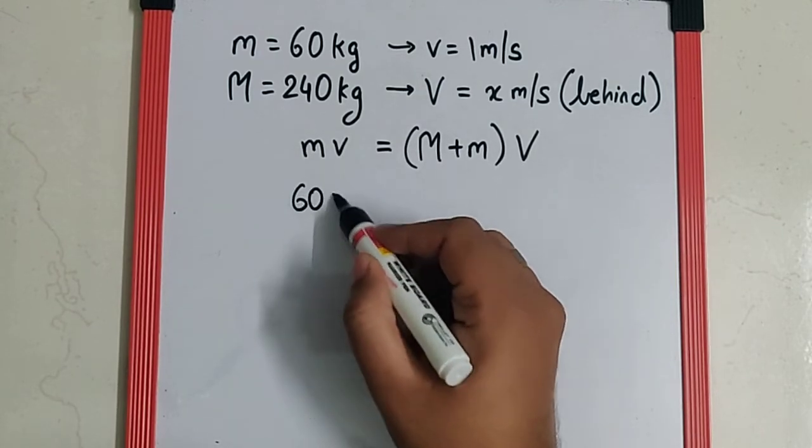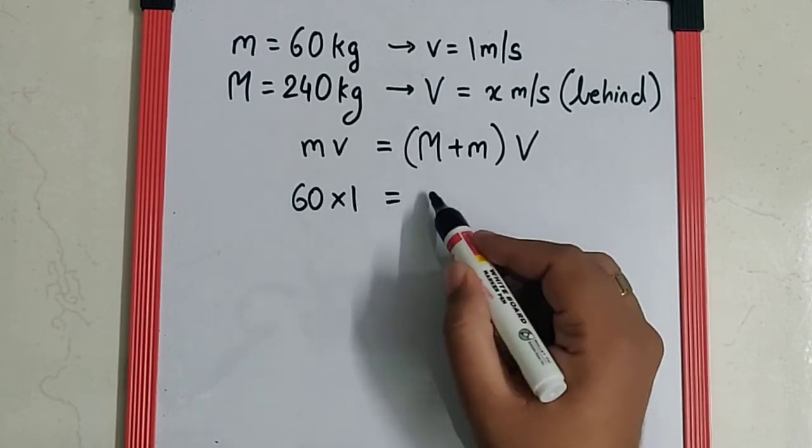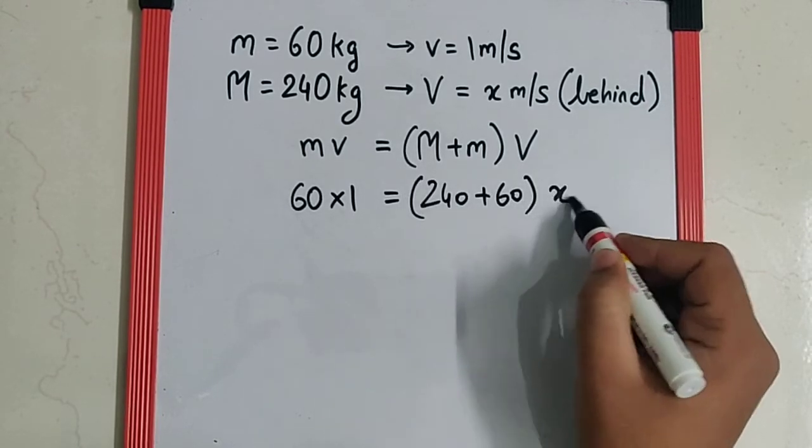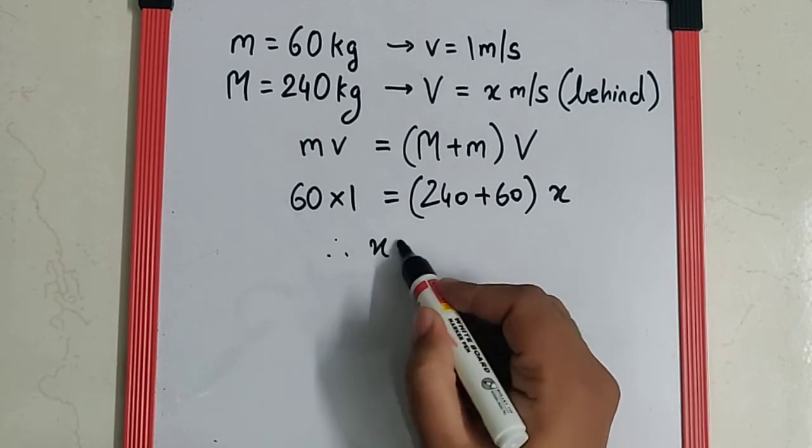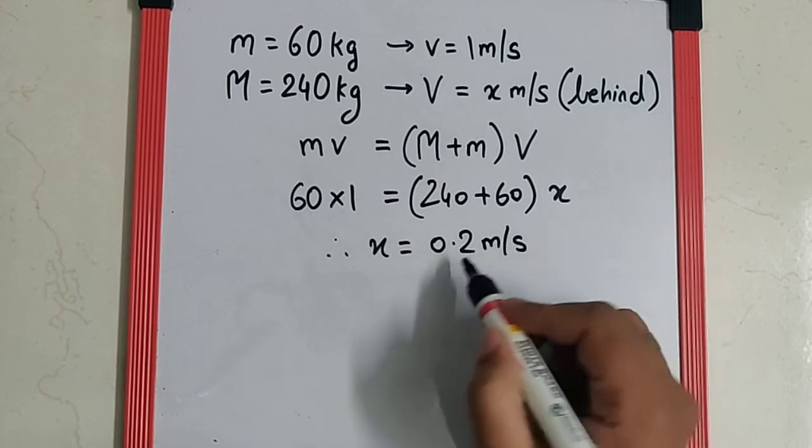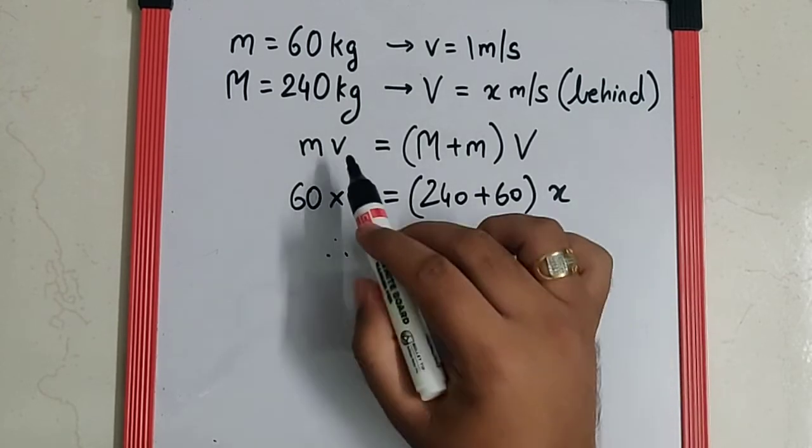So if it is 60 into 1, this is going to be 240 plus 60 into x and by solving we get x as 0.2 meter per second, which we can say direction-wise, it is opposite to that of the man.